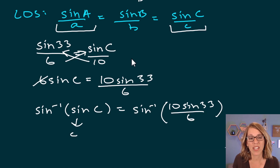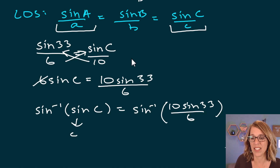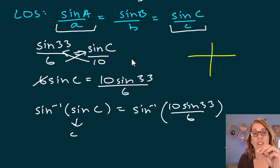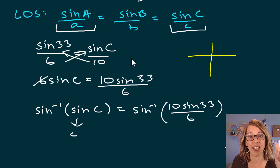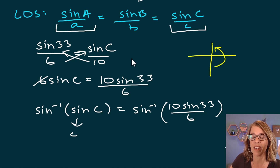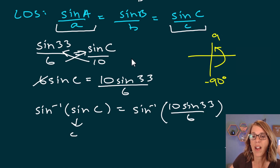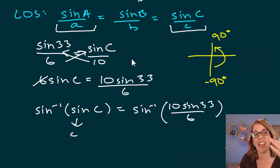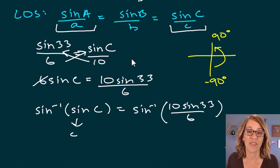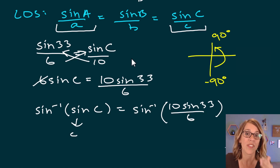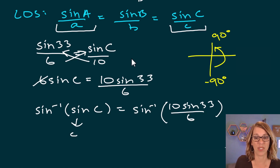We have to be careful here because sin⁻¹ and sin do cancel each other out, but sine inverse is a well-defined function, which means it will only return a single angle. In degrees, that's a single angle between −90° and +90° — it can only give back an acute angle. So we'll have to do a little extra work to find the second case, which is our obtuse angle.